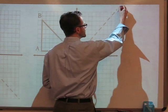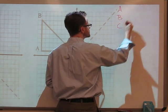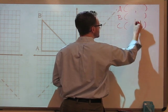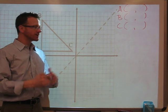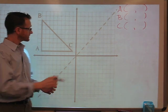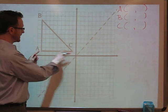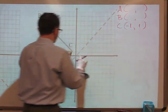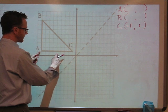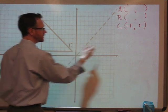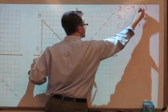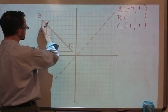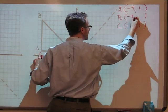First thing I want to do is record the coordinates of the vertices — A, B, and C — so we can try to find some patterns. I'd rather we discover a rule than just memorize a rule. So point C is at negative one, one. Point A is at positive one, negative nine. And point B is at negative nine, eight.